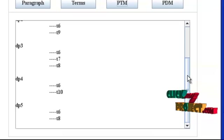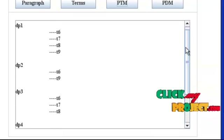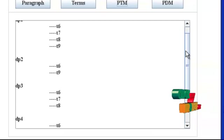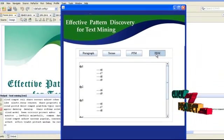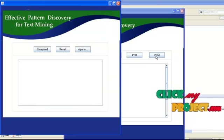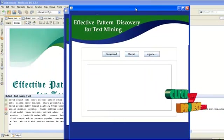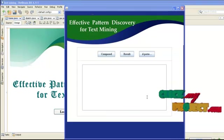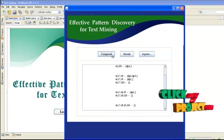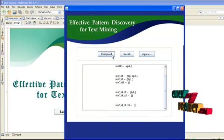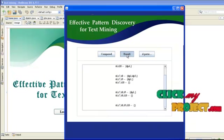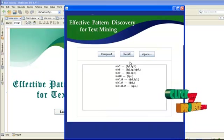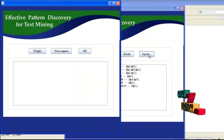Click PTM and the next form will open. In that form, click compose. The combination of terms present in the paragraphs are composed. Click result. The result of the paragraphs are displayed. Click D pattern and a new form will open.